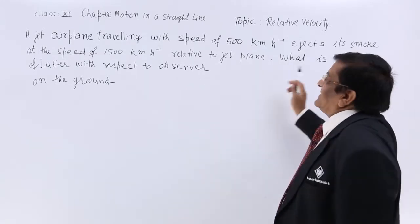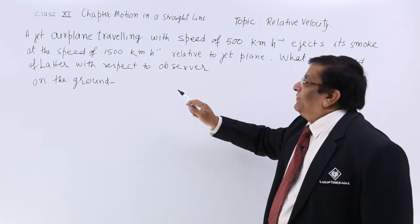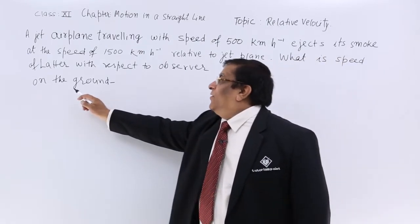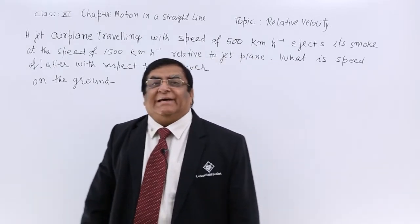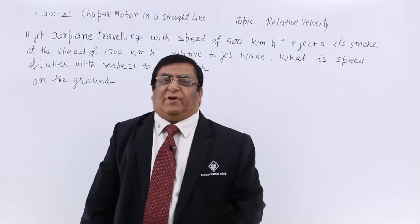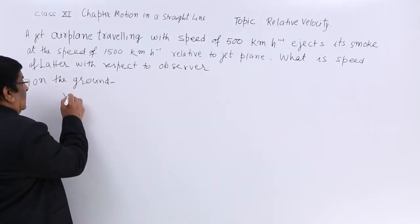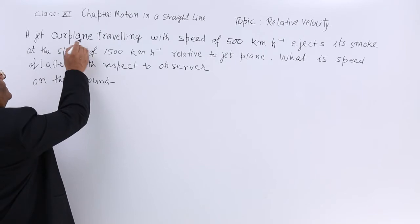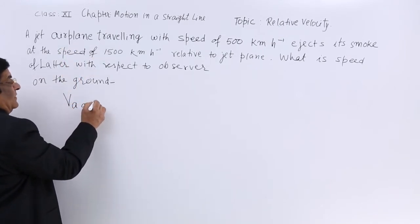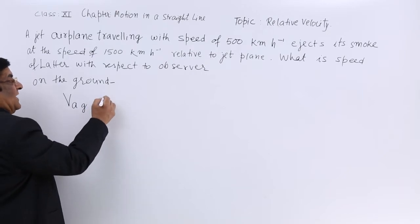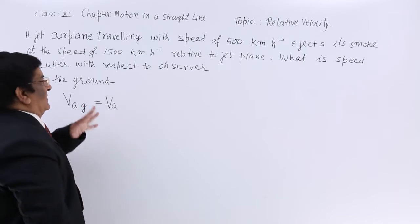What is the speed of smoke with respect to the observer, and where is the observer? The observer is on the ground. Now, here there are three types of velocities. One is the velocity of the airplane — velocity of airplane with respect to ground. Ground we take as rest, so that is the velocity of airplane; we also call it absolute velocity.